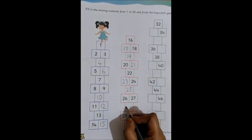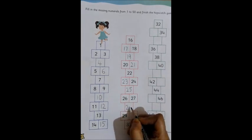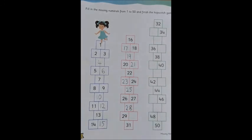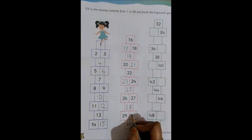26, 27 is there, we write 28. 2 and 8, 28. After that, 29 is there, then the next number is 30.